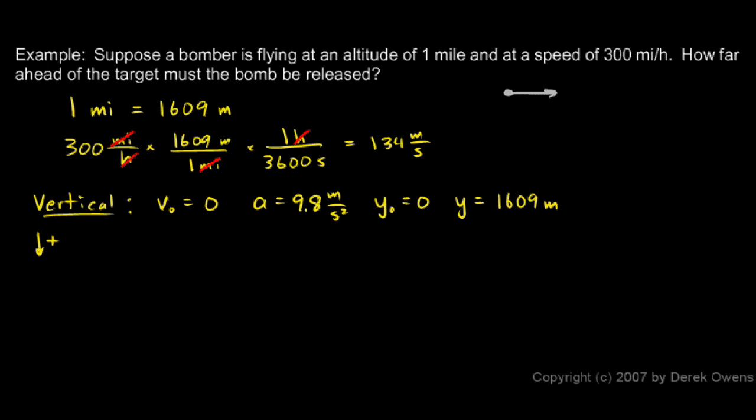And it might help you to make a little sketch to visualize that. You can draw the bomb here. It's moving along at its initial velocity. And it's moving down like this. We can consider down to be positive. Then the height right here is zero meters. And here it's 1,609 meters. And you should see that the zero and the 1609 set up like that is consistent with down being the positive direction.